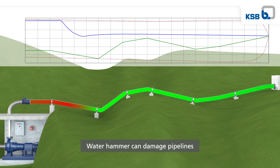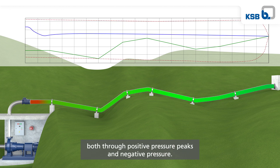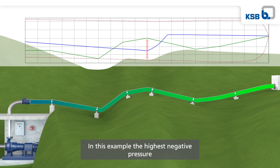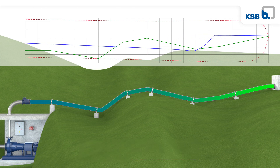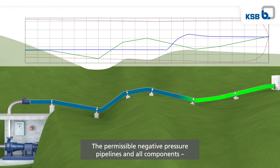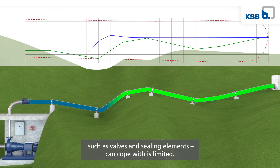Water hammer can damage pipelines both through positive pressure peaks and negative pressure. Whenever the pressure head curve is below the geodetic head of the pipeline, negative pressure is present. In this example, the highest negative pressure occurs at the high point in the middle of the pipeline section. The permissible negative pressure that pipelines and all components such as valves and sealing elements can cope with is limited.